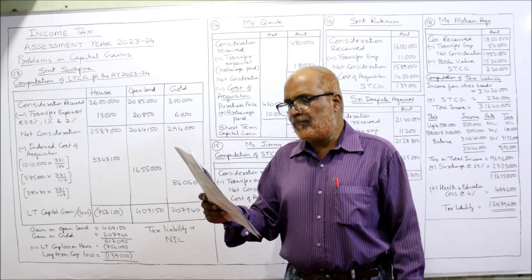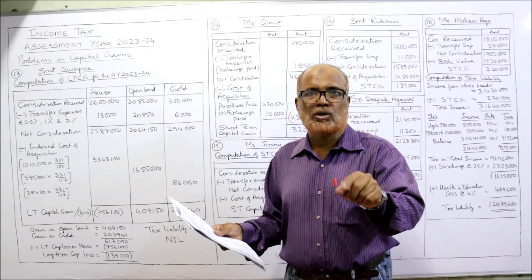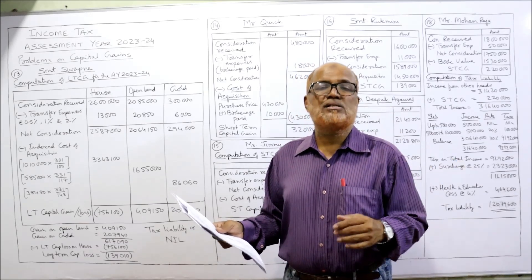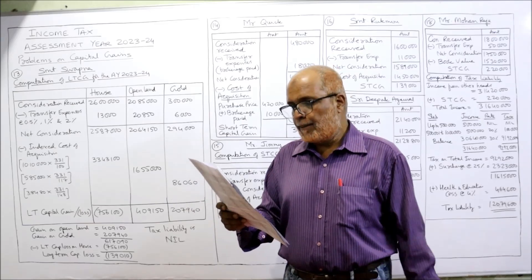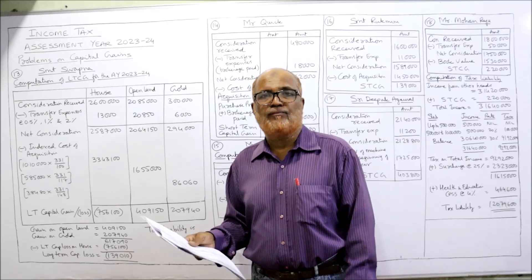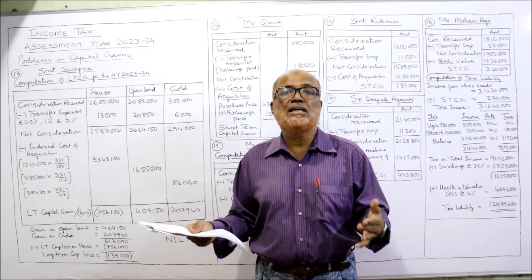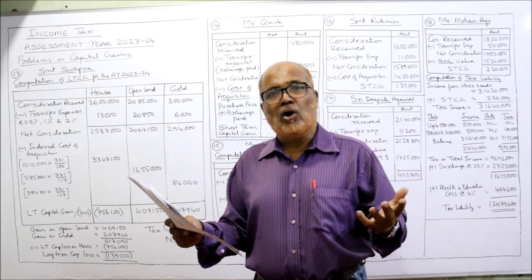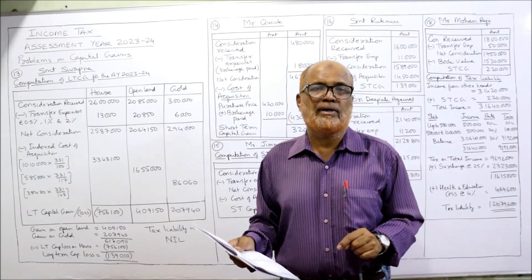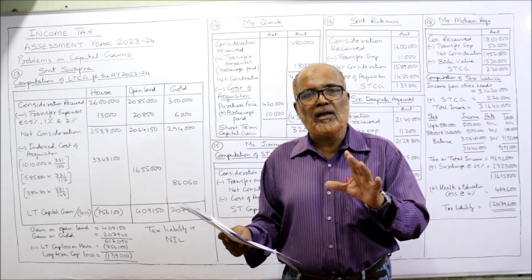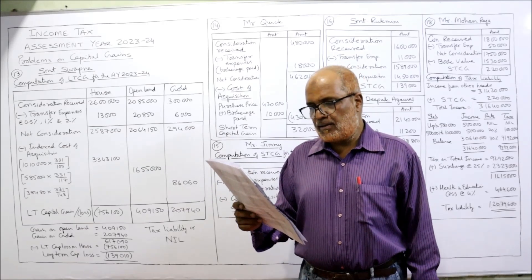The date of purchase for the house is 21st March 1999. If a house is sold within two years it's a short-term capital gain; if sold after two years it's a long-term capital gain — here more than two years, so long-term. Open land in city was purchased on 1st May 2005; more than three years holding means long-term. Gold was purchased on 4th May 2009 and sold in 2022-23, so again long-term. All three assets are long-term capital assets. Date of sale: 13th January 2023.